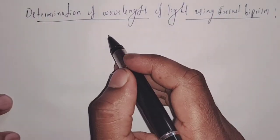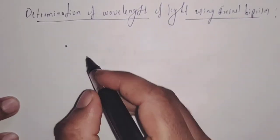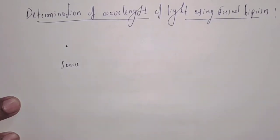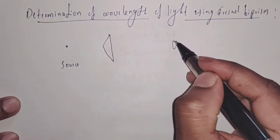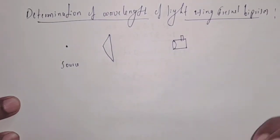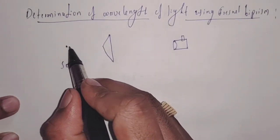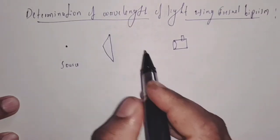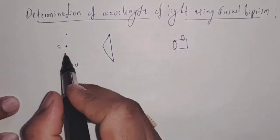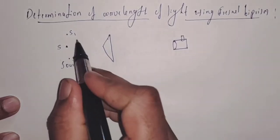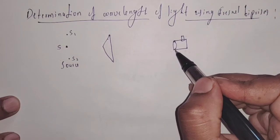The experimental setup to determine wavelength of light consists of a source, a biprism, and then an eyepiece. The light waves from source S are incident on the biprism, and due to this, we are going to observe two virtual sources S1 and S2. Due to these virtual sources, we are going to observe an interference pattern in the eyepiece.